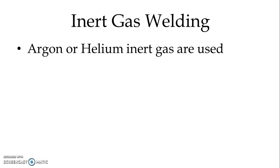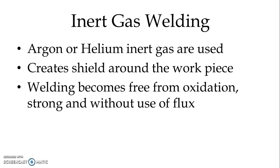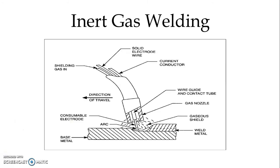The next is inert gas welding. We use argon or helium as inert gas, and the inert gas creates a shield around the workpiece. The advantage is that welding becomes free from oxidation and is strong without the use of flux. We use inert gas welding for aluminum alloys, magnesium and its alloys. In the figure we can see the schematic diagram showing the base metal, deposited metal, welding zone, arc struck, consumable electrode, and shielding gas like argon or helium — the arc is generated in the atmosphere of inert gas.